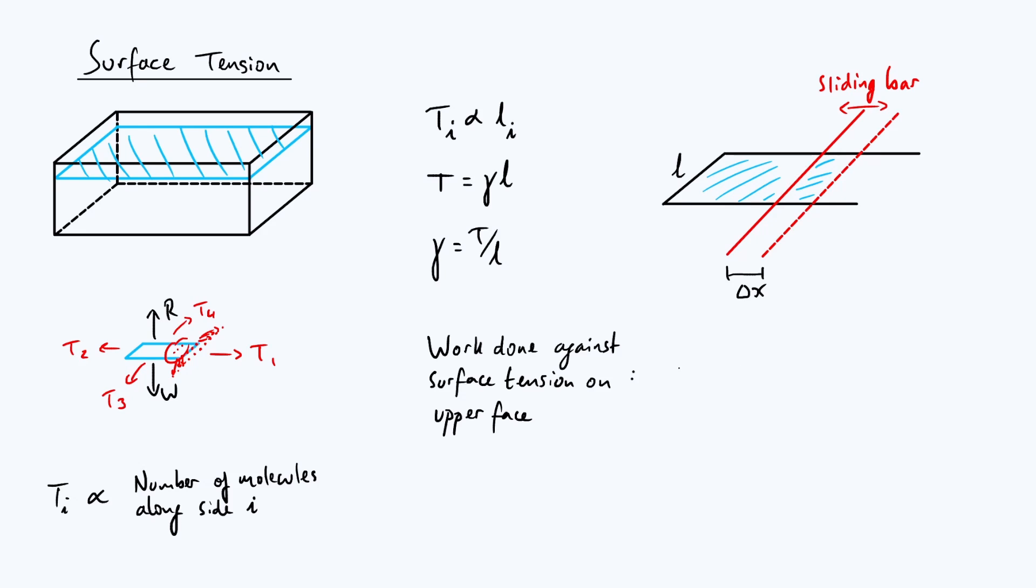We can use the fact that work done for a constant force is force times distance. So delta E, change in energy, is the tension force we're working against multiplied by the displacement delta x. The tension force is just the surface tension gamma multiplied by the length L, then we multiply that by delta x. L delta x has a special significance because it's the area of the rectangle of new surface area we're creating, so we could write that as gamma times delta A.